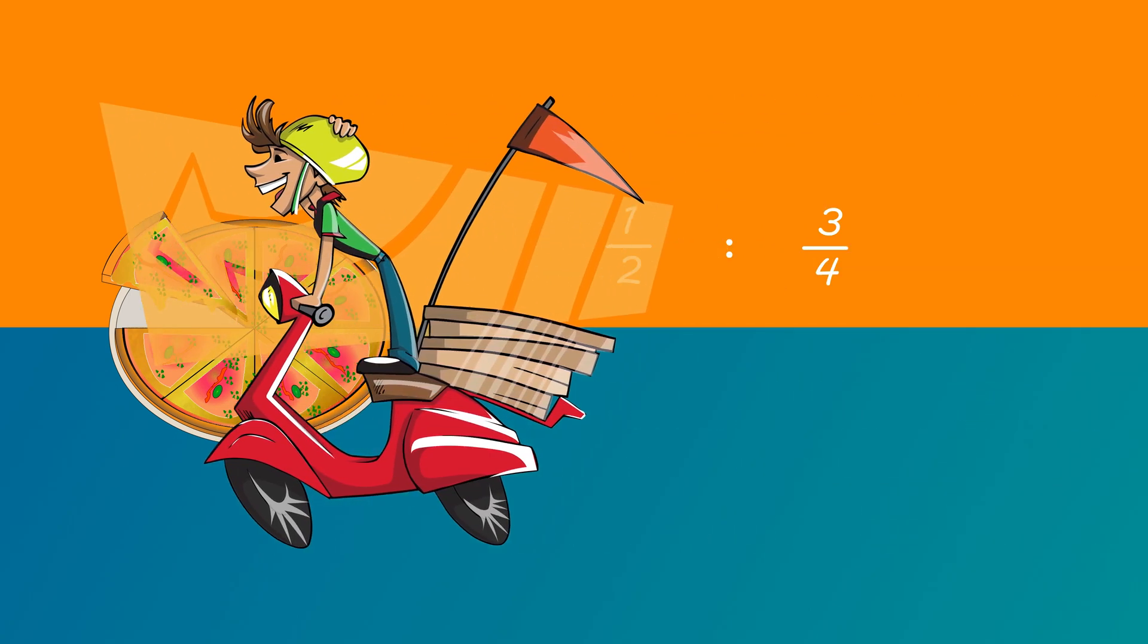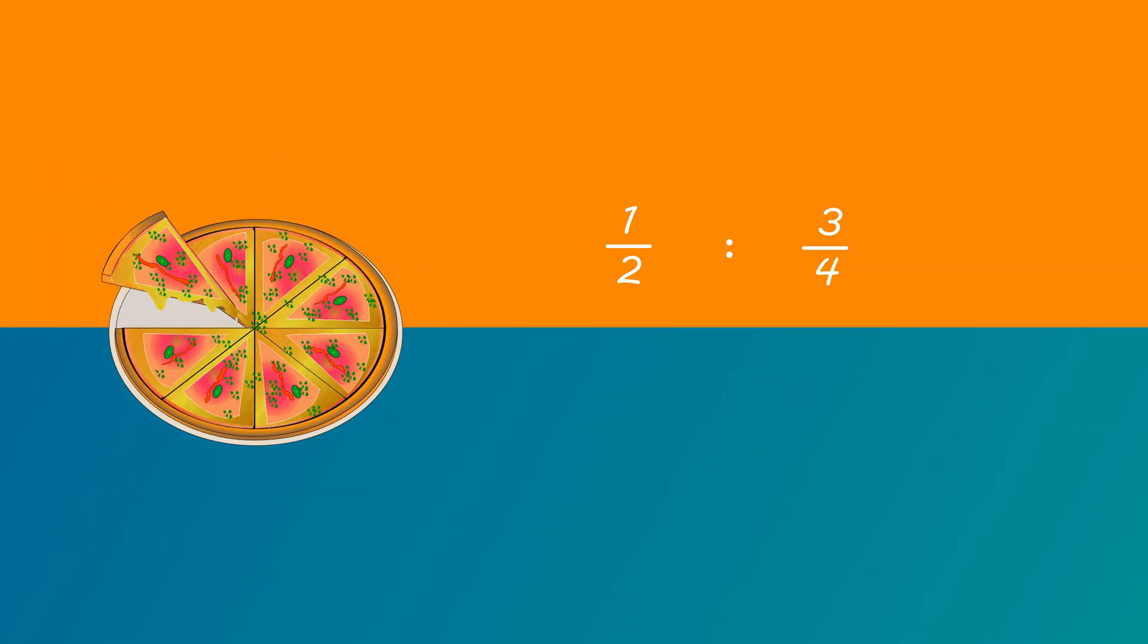Here we compare fractions. One half is to three quarters. The trick is to multiply both fractions by one number that will get rid of the denominator. We will multiply both fractions by four. One half times four is two. Three quarters times four is three. So the final answer is two is to three.